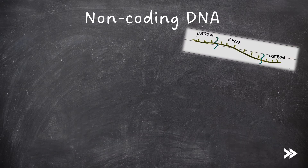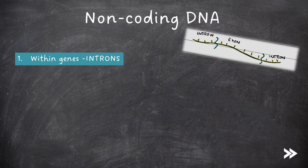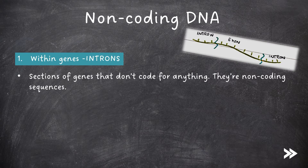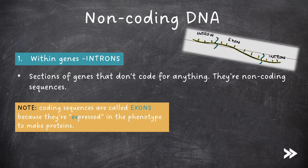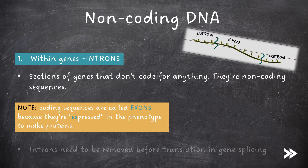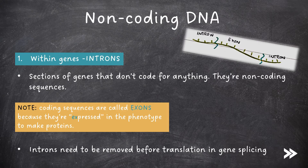Introns are sections of genes that don't code for anything — they're non-coding sequences. It's actually still debated why they exist, and they don't exist in prokaryotes. Note that coding sequences are called exons because they're expressed in the phenotype to make proteins. Introns need to be removed before translation in gene splicing, a topic which we'll cover later on in more detail when we talk about protein synthesis.